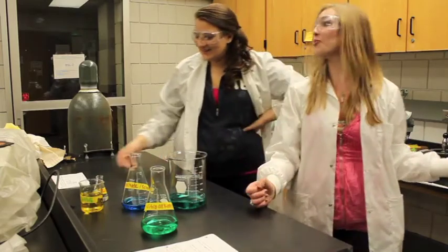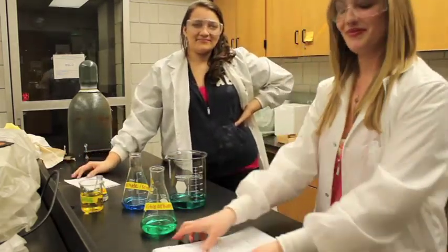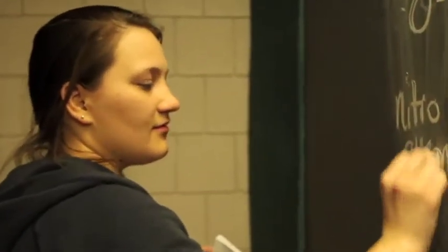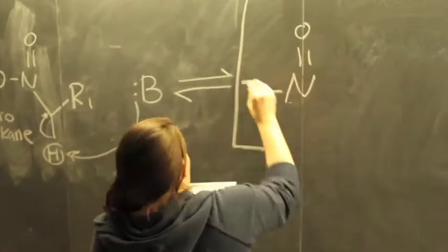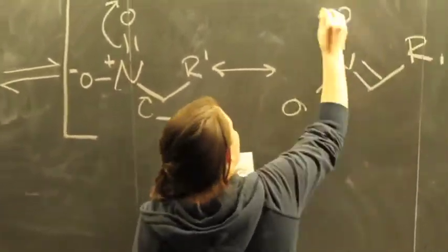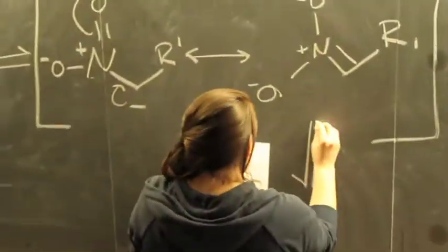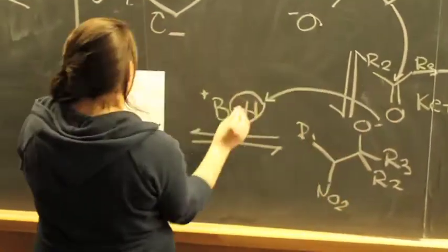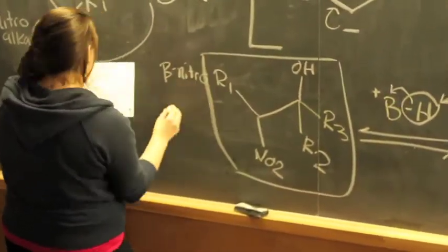If you'll come with me to the classroom for a minute, we can discuss the actual mechanism. The first step of the Henry reaction is the deprotonation of a nitroalkane on an alpha carbon, forming a resonance-stabilized anion. The next step is the alkylation of the nitronate anion with the carbonyl-containing substrate to form a diastereomeric beta-nitro alkoxide. Finally, the alkoxide is protonated by the previously protonated base to yield a beta-nitro alcohol as the product.